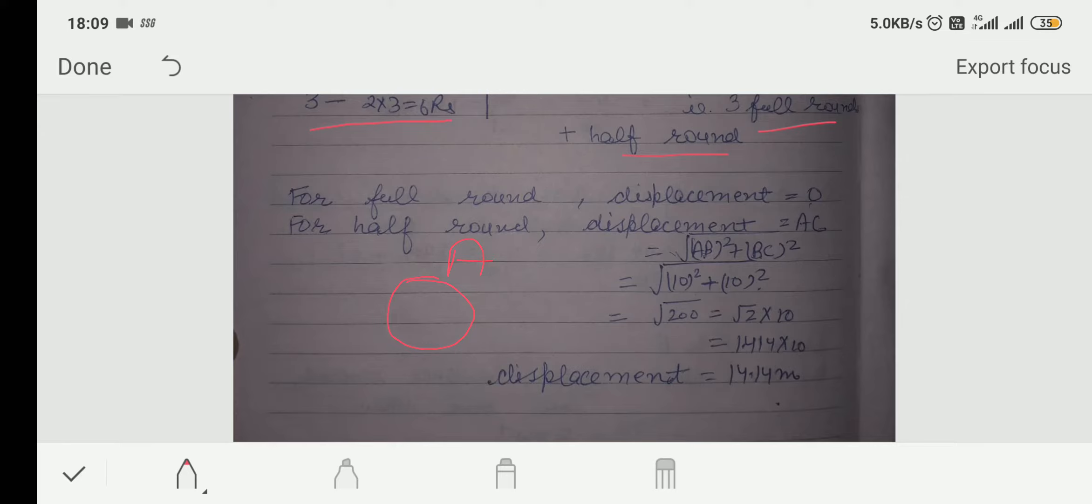Here, for full round, initial and final points will be same. For square field also. A, B, C, D. If farmer starts his journey from point A, after 3 full round, he will again come to point A. That's why the displacement is 0.